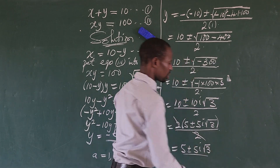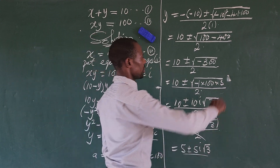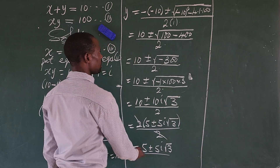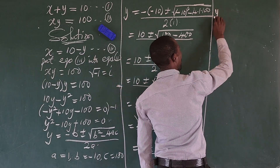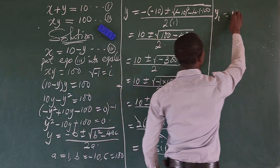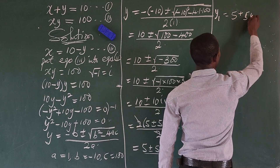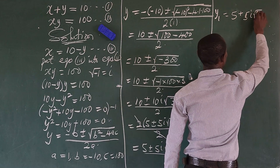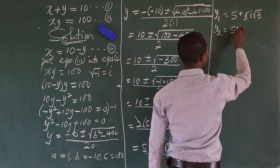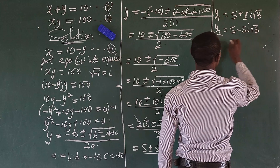We now have two solutions. y1 equals 5 plus 5 iota root 3, and y2 equals 5 minus 5 iota root 3. These are the two values of y that satisfy the original equation.